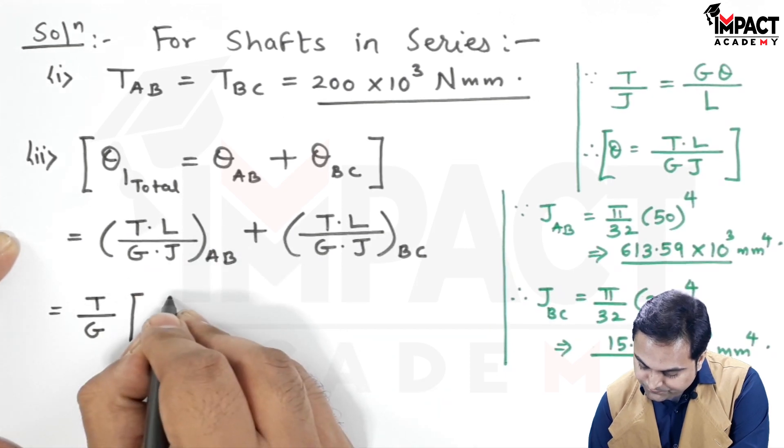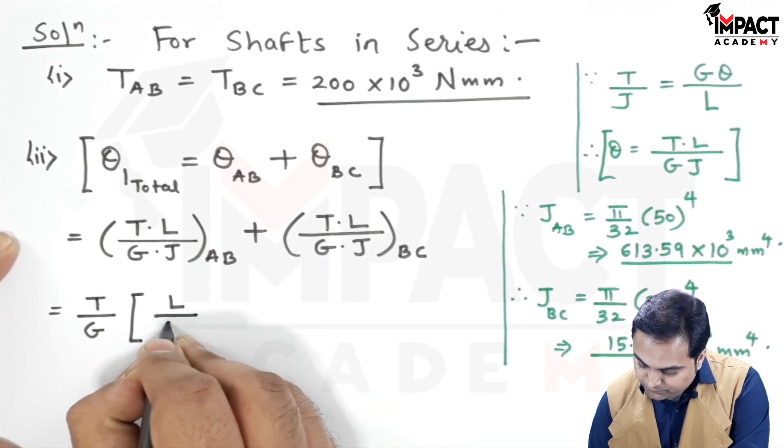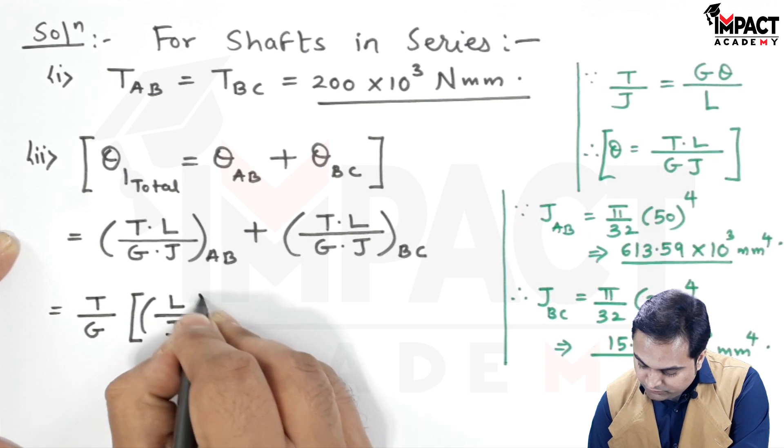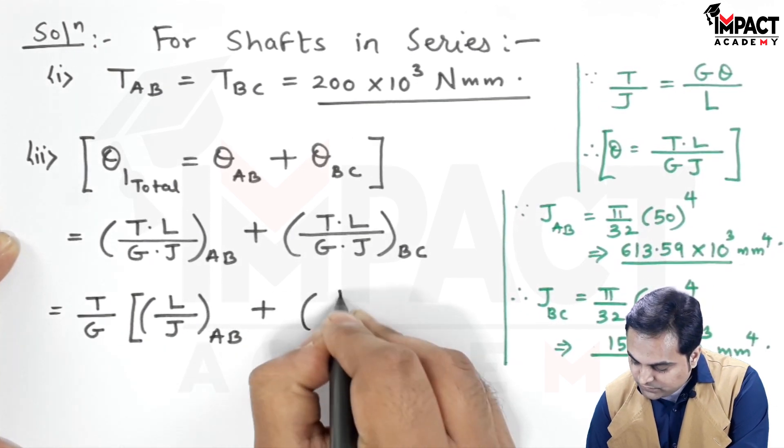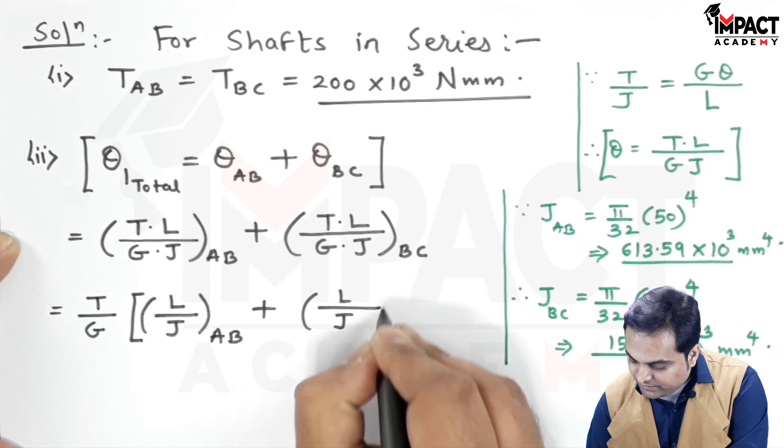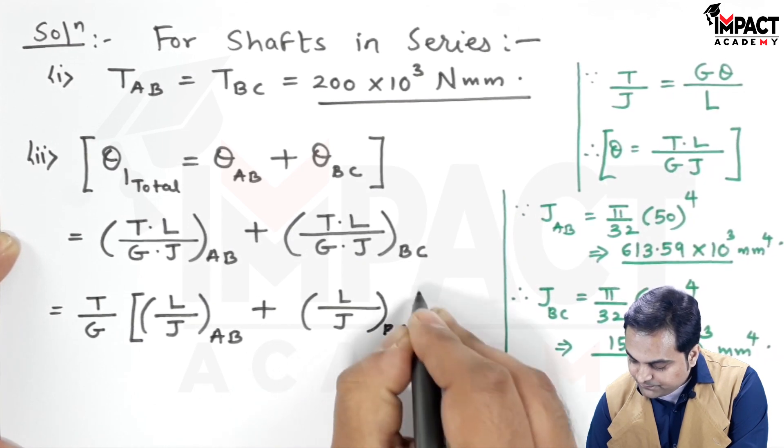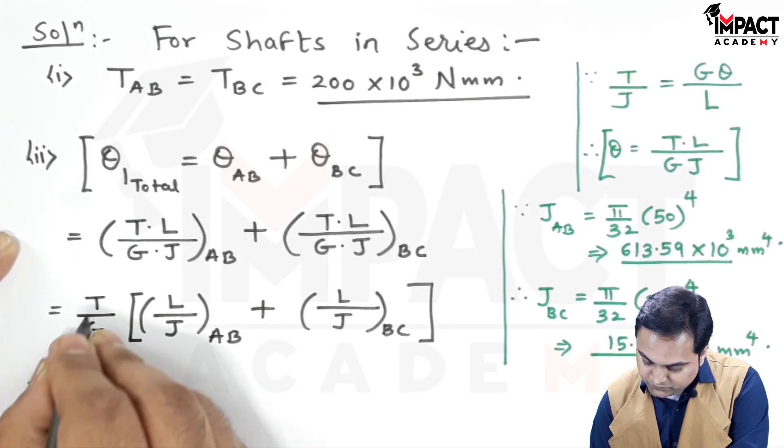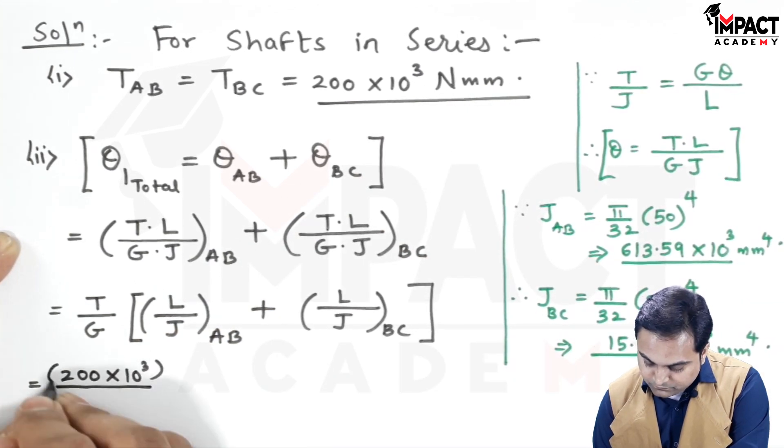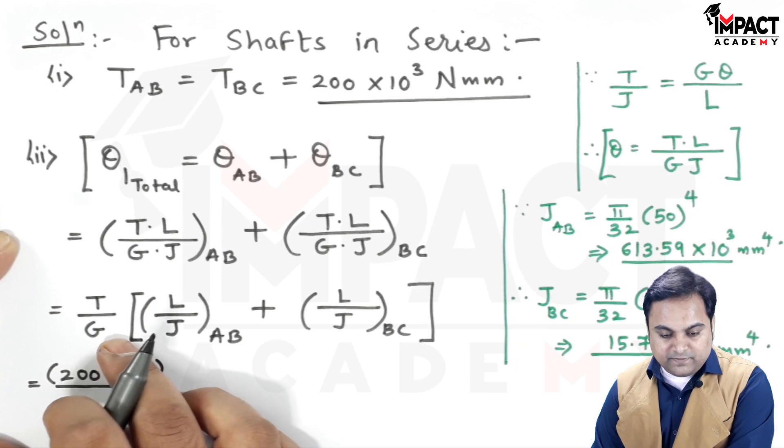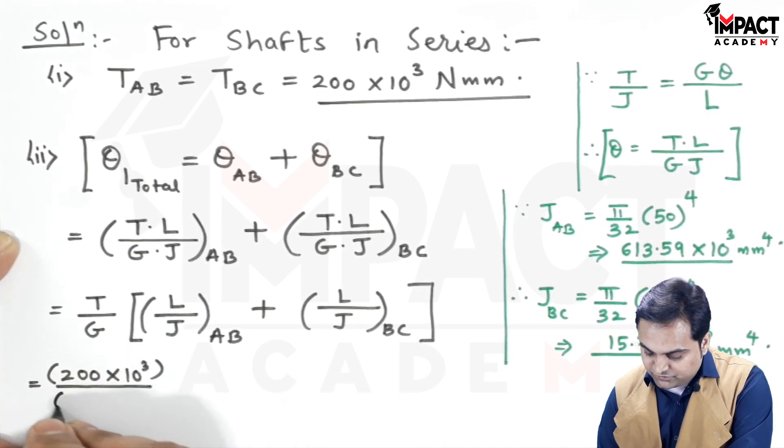This becomes θ_total = T/G × (L_AB/J_AB + L_BC/J_BC). The torque value is 200×10³ N·mm. G is 80×10³ N/mm².